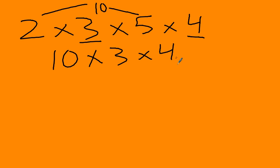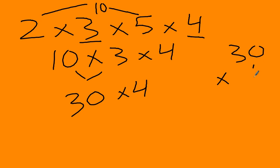Wait. I know that 10 times 3 is just 30, times 4. And I can come over here and go 30 times 4. 4 times 0 is 0. 4 times 3 is 12. The answer is 120.